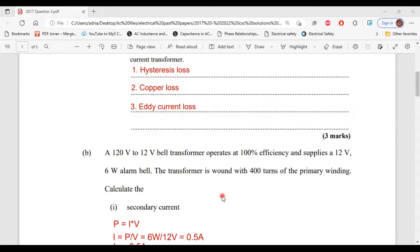Based on what is given from part B, we know that the primary voltage is 120 volts and the secondary voltage is 12 volts. We know the secondary voltage is 12 volts because that's what is being supplied to the alarm bell along with a power of 6 watts. In order to calculate the secondary current, we'll have to use the power formula where P equals I times V, because on the secondary side, we know that 12 volts and 6 watts is being supplied to the alarm bell.